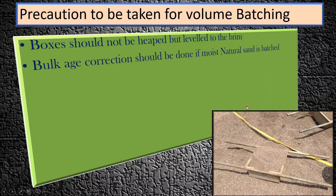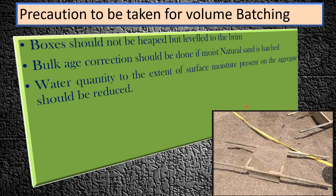Second, bulkage correction should be done if moist or natural sand is batched, because the sand absorbs water and its volume increases. Third, the water quantity should be reduced to the extent of surface moisture present on the aggregate. If aggregates stored outside have absorbed moisture, using them directly will add excess water to the concrete.